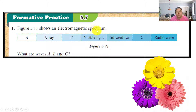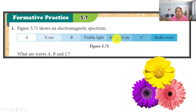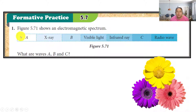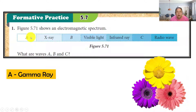Now we see the formative practice from the textbook. The question shows the electromagnetic spectrum and asks you to fill in the blanks. Using the story: start with radio (A), then microwave (B = microwave), then infrared, then visible light, then UV light — going to school and getting sun exposure. Then x-ray at the doctor's, and finally gamma ray for treatment. So the answers are: A is gamma ray, B is UV light, and C is microwave.